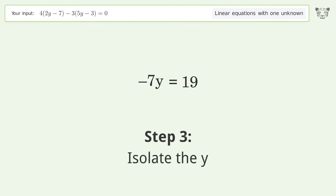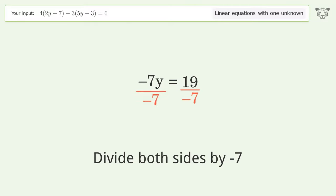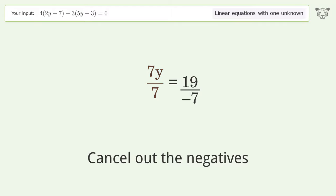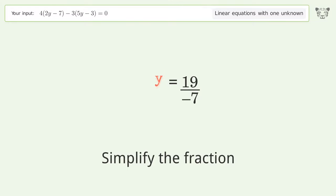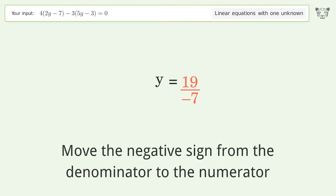Isolate the y. Divide both sides by negative 7. Cancel out the negatives. Simplify the fraction. Move the negative sign from the denominator to the numerator.